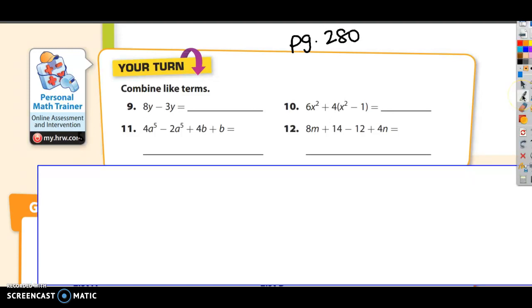I'm going to start with the first one. Number 9 reads, the directions are combine like terms. Number 9 reads 8y minus 3y. And I want you to remember what like terms are. Like terms are when you have the same variable. And y is the same variable, so I can actually do the operation 8 minus 3. 8 minus 3 is 5, so the answer is 5y.